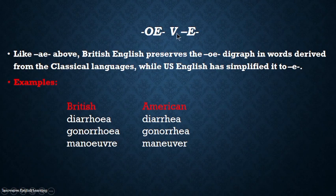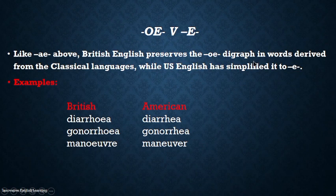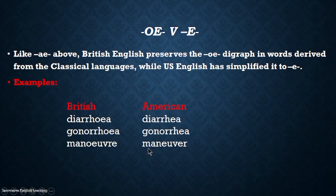Next we have 'oe' versus 'e'. Like 'ae', British English preserves the 'oe' digraph in words derived from classical languages, while American English has simplified it to 'e'. For example: diarrhoea vs. diarrhea; gonorrhoea vs. gonorrhea; manoeuvre vs. maneuver.